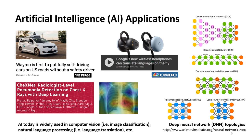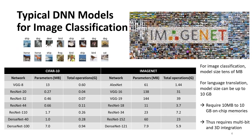AI applications have been prevailing in our daily life. Here are a few examples from the self-driving car to language translation on the fly to biometric image analytics. Most of those applications are powered by deep neural network models. Deep neural networks have many kinds of topologies, from deep convolutional neural networks to deep recurrent neural networks. Here on the right-hand side, we have a family of deep neural network models — we can call it the neural network zoo.